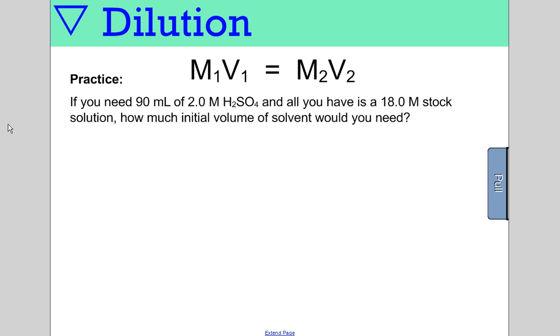If you need 90 mils of 2.0 molar sulfuric acid, and all you have is 18 molar stock sulfuric acid, how much initial volume of solution would you need? We're going to begin with 18.0 molar solution, three sig figs. We're going to have an unknown volume of it. We're going to make 2 molar sulfuric acid, and we're going to have 90 milliliters of it.